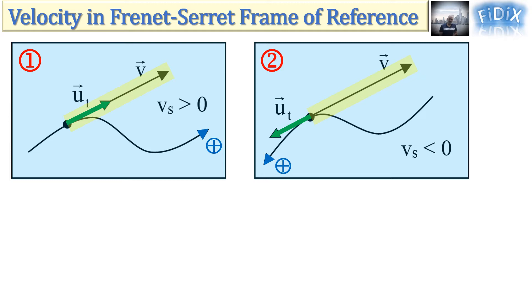Therefore, it can be written as a function of u_t. Vector v is equal to the algebraic value v_s multiplied by vector u_t.